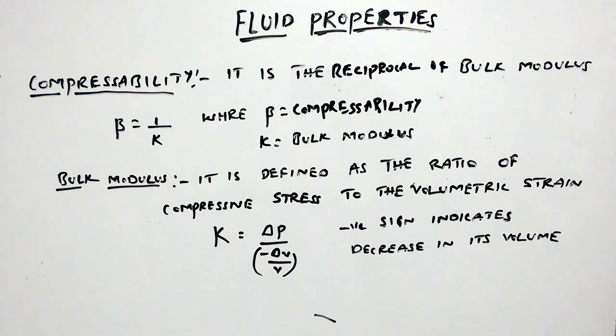Here we can observe this negative sign. The negative sign indicates the decrease in volume. The units of bulk modulus is newton per meter square.